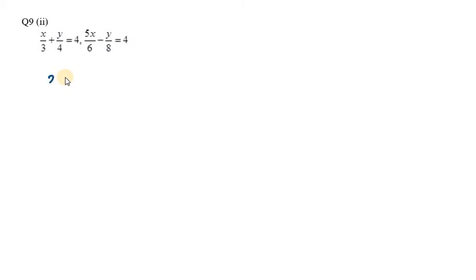We have x/3 + y/4 = 4. Now we need to take the LCM of the left-hand side, which is 12. Multiply the first term by 4 and the second term by 3 to make them both over 12, so we get 4x and 3y.